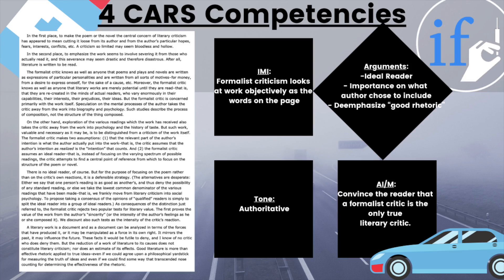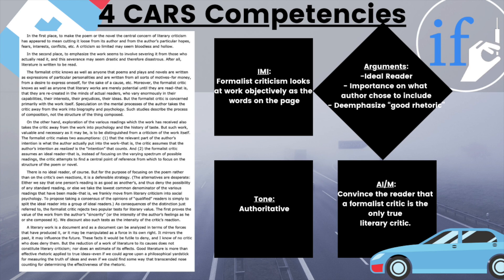Let's look at an example. This is an essay describing something called the Formalist Critic. For my immature main idea, I wrote: the Formalist Critic looks at work objectively as the words on the page. So the central idea is that the author is saying a Formalist Critic is someone who looks at the work objectively as the words on the page. For arguments, you can see I have them in bullet-pointed fashion. If you go back and read this paper, you'll see that all of these arguments were things the author chose as true assumptions to justify the immature main idea — and that's really what you're looking for in the arguments section.